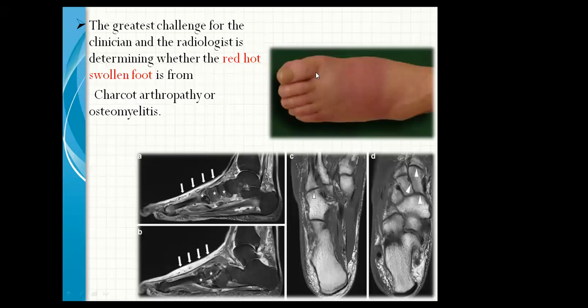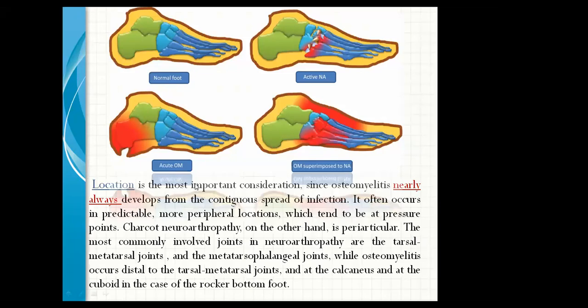The greatest challenge for the clinician and radiologist is determining whether the red hot foot is from Charcot arthropathy or osteomyelitis. Location is the most important consideration, since osteomyelitis nearly always develops from contiguous spread of infection. It often occurs in a predictable, more peripheral location, which tends to be at the pressure points. Charcot neuroarthropathy, on the other hand, is periarticular. The most commonly involved joints are the tarsometatarsal and metatarsophalangeal joints, while osteomyelitis occurs distal to the tarsometatarsal joint and at the calcaneus and cuboid in the case of rocker bottom deformity.